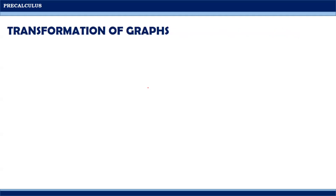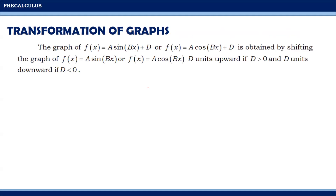This time, let us talk about the transformation of graphs. The graph of f(x) = a·sine(bx) + d or f(x) = a·cosine(bx) + d is obtained by shifting the graph of f(x) = a·sine(bx) or f(x) = a·cosine(bx) by d units upward if d > 0, and d units downward if d < 0.